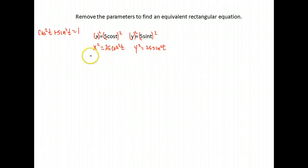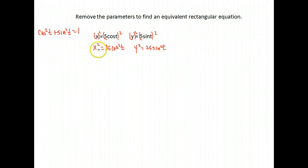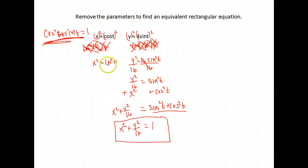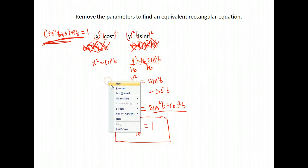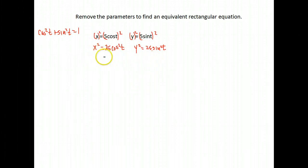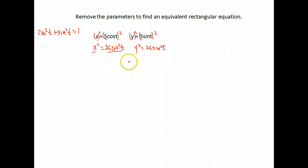Now let's stop and evaluate what we have. We want to end up with a cosine squared plus a sine squared. So we add x squared to one side and its equivalent 25 cosine squared t to the other side. Notice they both have a coefficient of 25, so that's not as big of a problem as before — previously one was just cosine squared and the other was 16 sine squared. I can use the same tactic: if you add equivalent things to both sides of an equation, it keeps its balance. So adding x squared on one side and 25 cosine squared t on the other keeps it balanced.